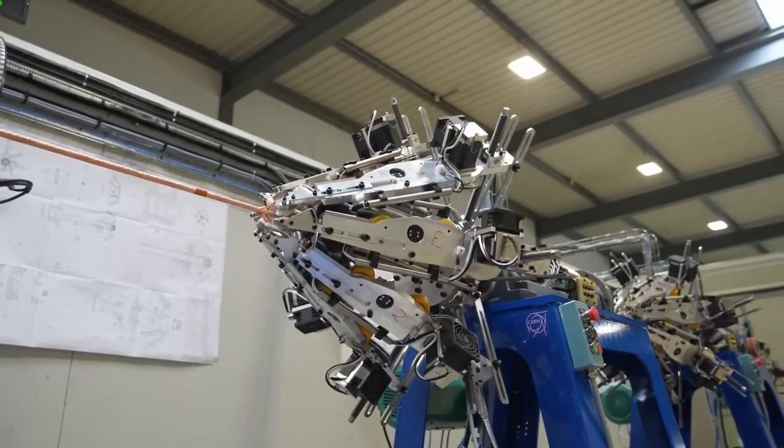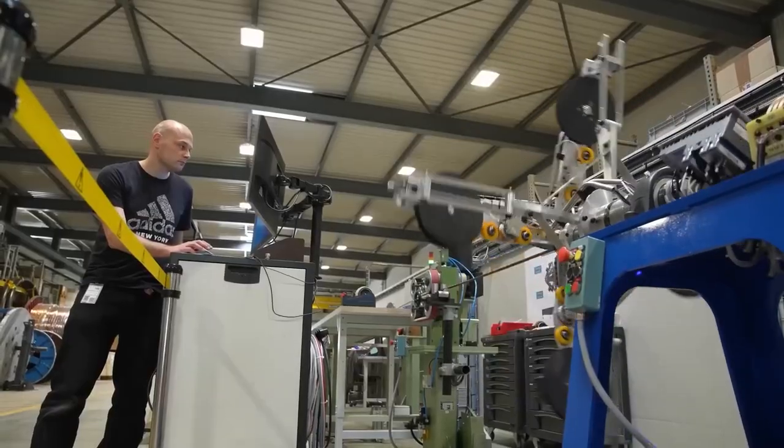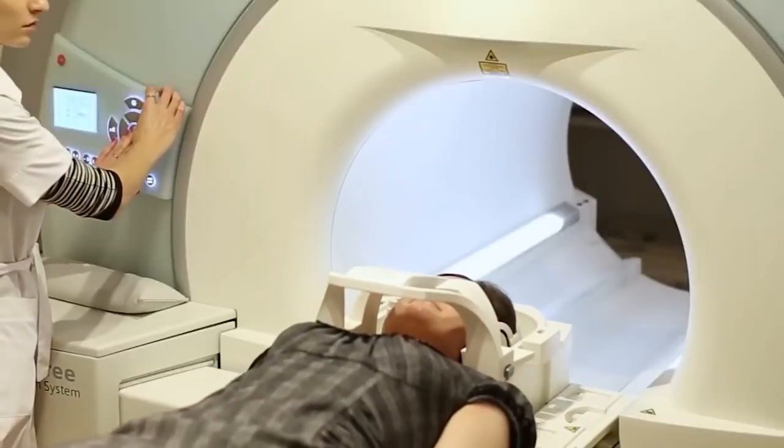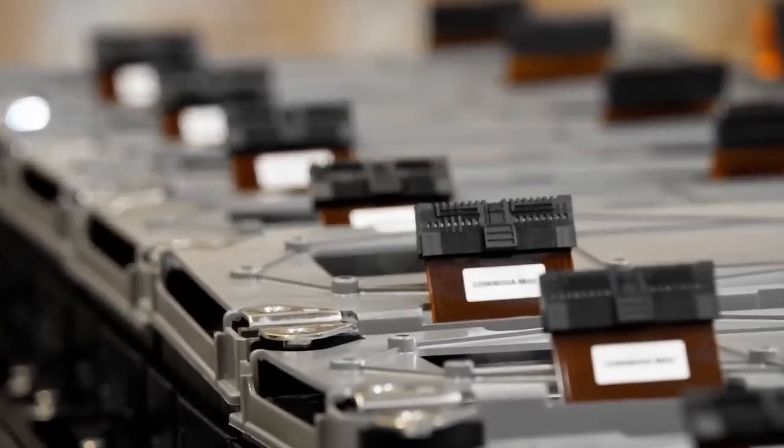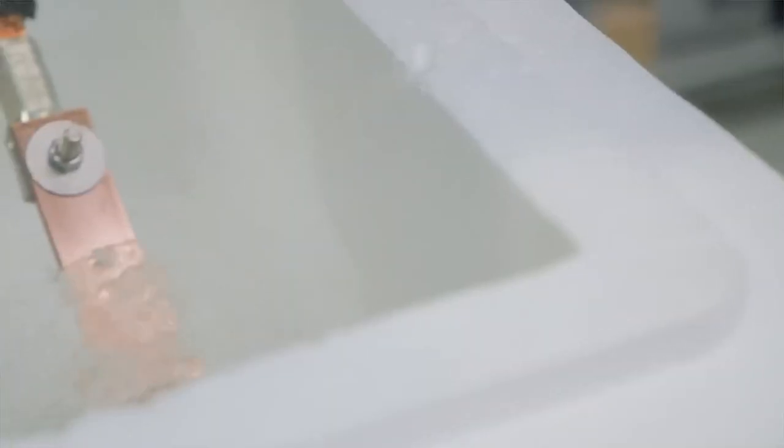Superconducting wire coils can become not only powerful magnets like those used today, say, in magnetic resonance imaging machines, but also efficient energy storage devices. Indeed, if we somehow inject energy from an electric current into a superconductor, it will store that energy for a long time without losses.